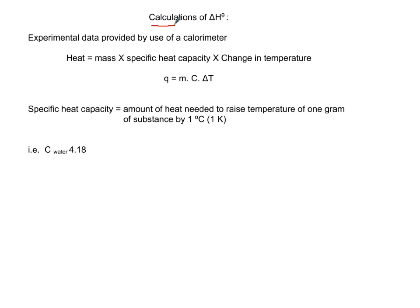Calculations of delta H: the equation to use depends on what data is provided in the question. If it's experimental data and you have a calorimeter with temperature fluctuation, we use heat equals mass times specific heat capacity times change in temperature.